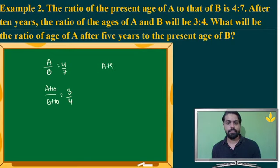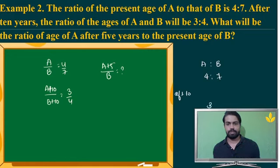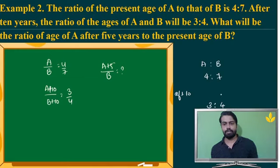The question is A plus 5 by B. Everybody can solve this by cross-multiplying, but I see a logic here. A is to B is now 4 is to 7. But after 10 years the number has to increase, yet they are giving it as 3 is to 4. I need to add 10 as a common number, so the ratio should also increase by a common number — I am looking for such a value.